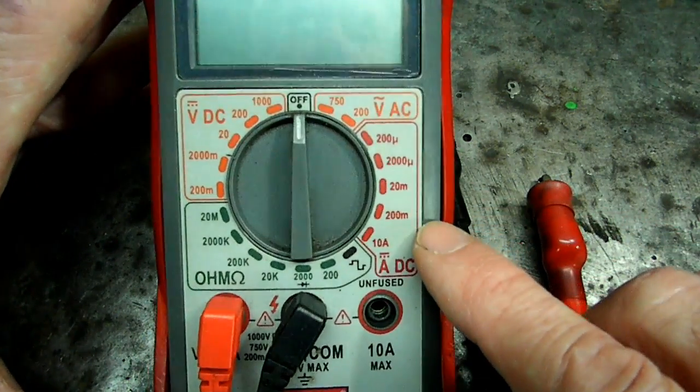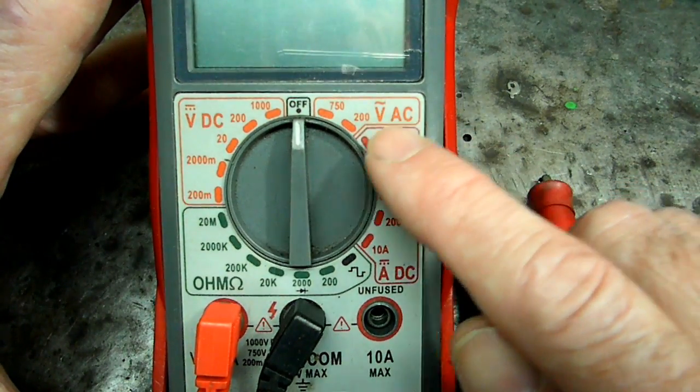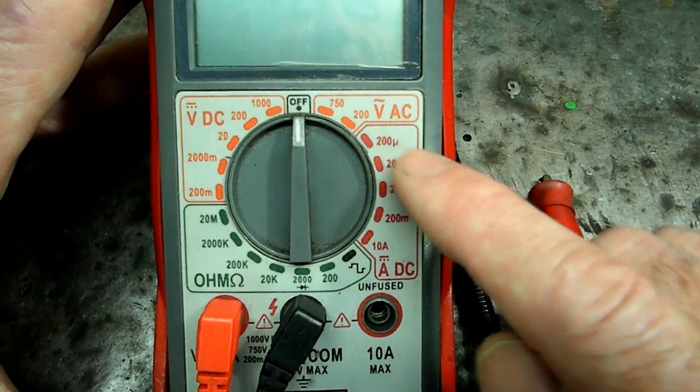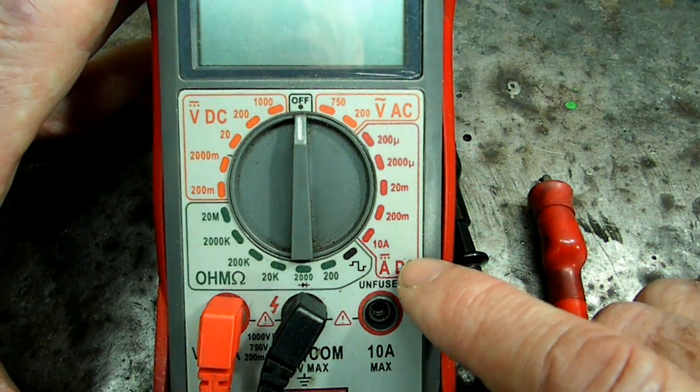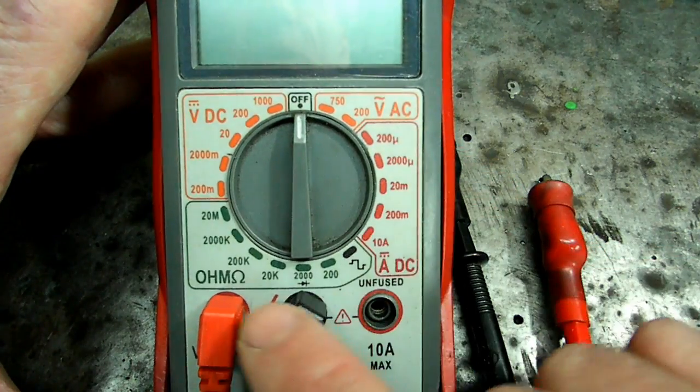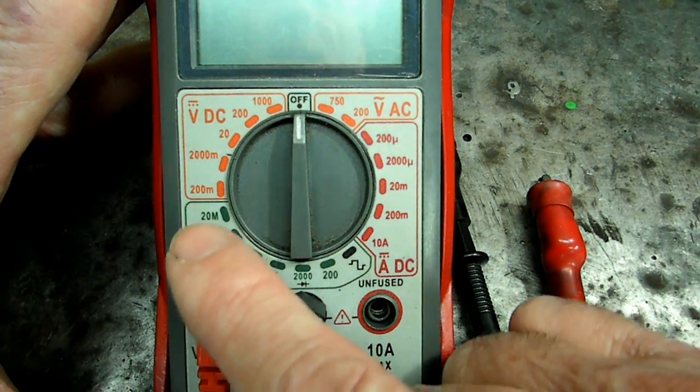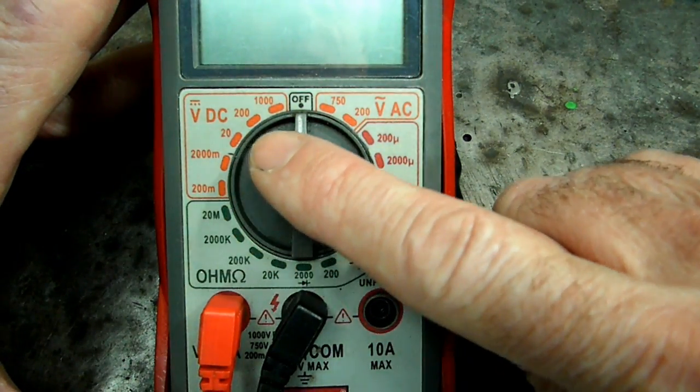Now what we have on our scale here is voltage AC right here. We have the 750, 200 scale. And right down here we have amperage DC. Over here we have the ohms scale area, and finally our voltage DC.